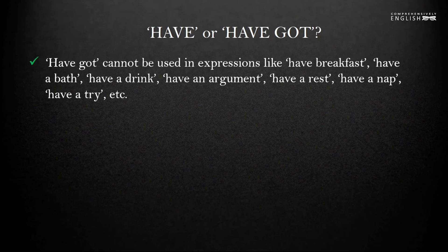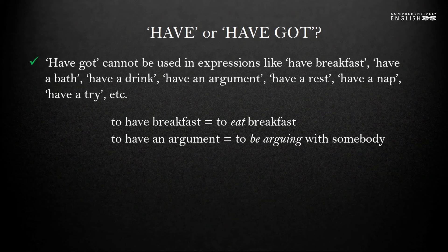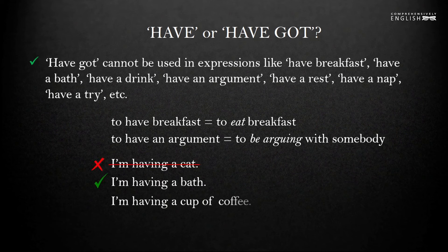Remember, in all these expressions the verb have is not used in its traditional sense — it doesn't literally mean to possess. It means to eat, to drink, to be, and so on. For instance, to have breakfast means to eat your breakfast; to have an argument means to be arguing with somebody. That's why we cannot use these expressions in progressive tenses either. We can say 'I'm having a bath' or 'I'm having a cup of coffee.' As have is not used in its traditional sense to possess something, have and have got in such expressions are not synonyms.